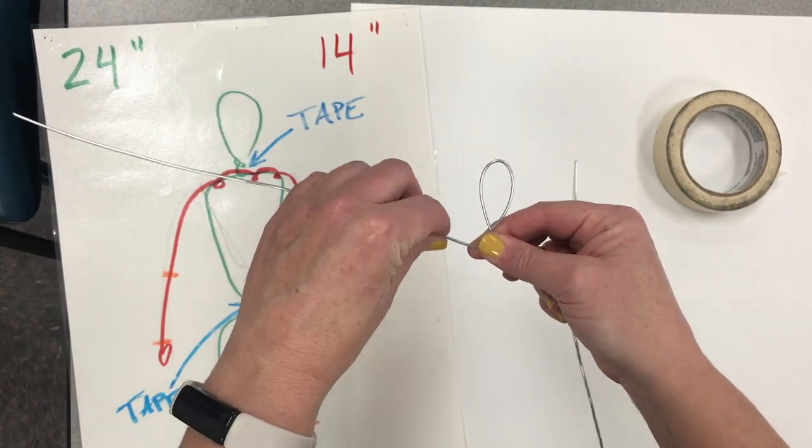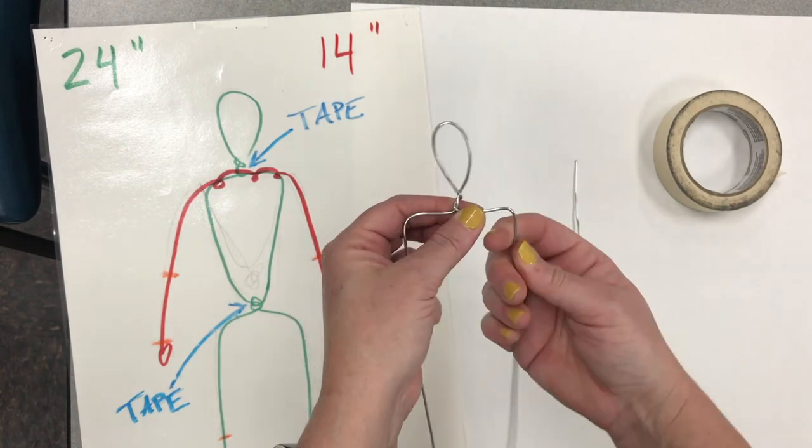Now for the shoulders, go out and down, out and down. Make sure they are even. Fix them if they're not.